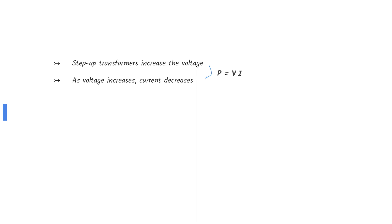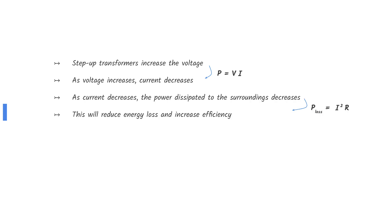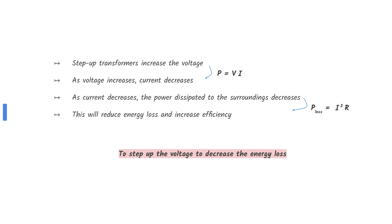Step-up transformers increase the voltage, which decreases the current — we can derive this from the power equation where power is constant. Power loss can be calculated by P equals I squared R. As the current decreases, the power dissipated to the surroundings also decreases, reducing energy loss. To summarize, the purpose of using a step-up transformer is to increase the voltage in order to decrease energy loss.